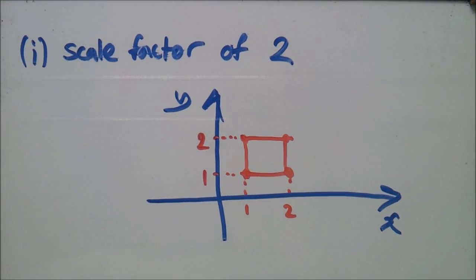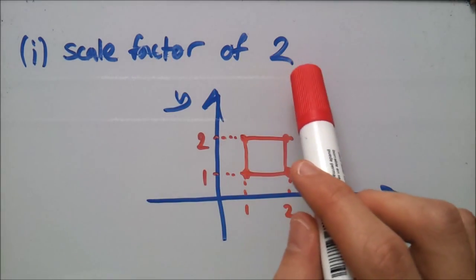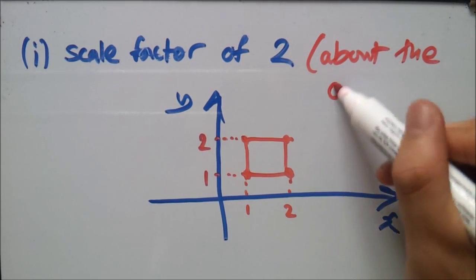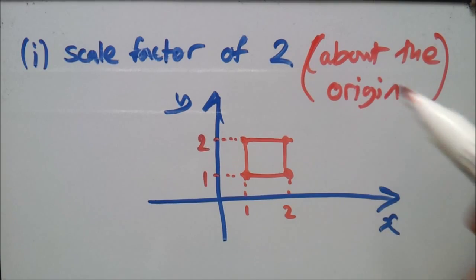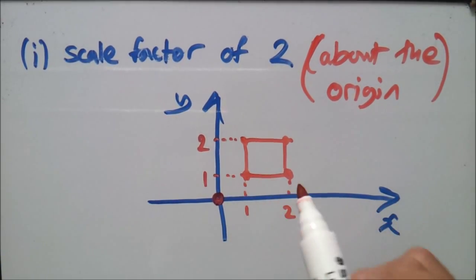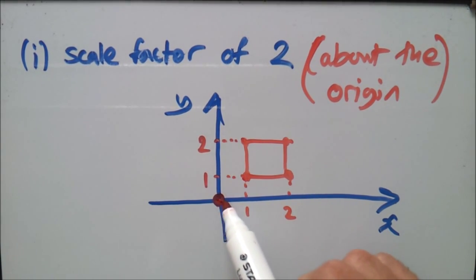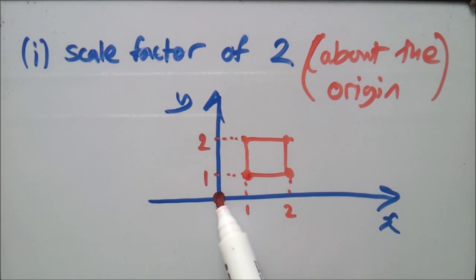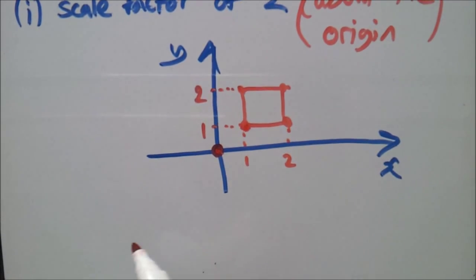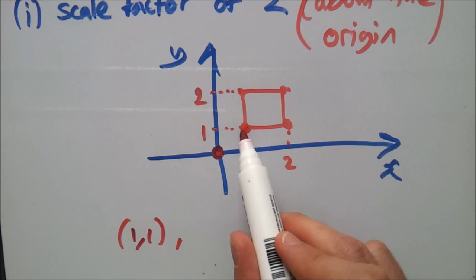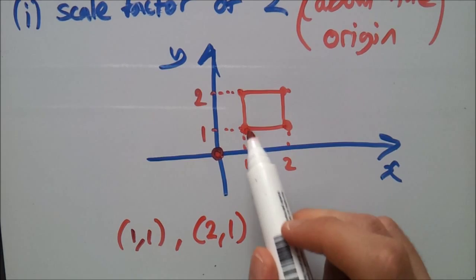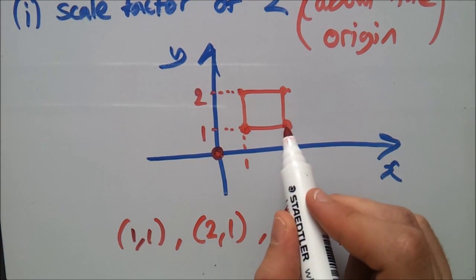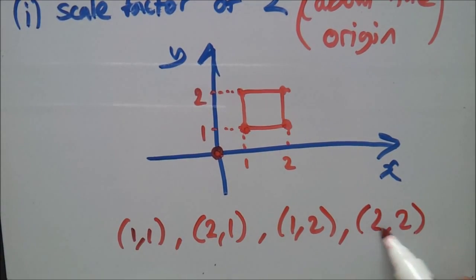In this question we want to find a scale factor of two. Normally in every question you might get the extra instruction 'about the origin,' meaning you start from here and find the scale factor from that point. Let's find all four corners first. The bottom-left is (1, 1), the bottom-right is (2, 1), the top-left is (1, 2), and the top-right is (2, 2).